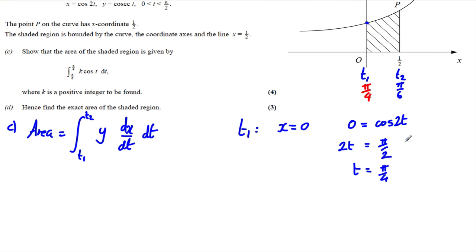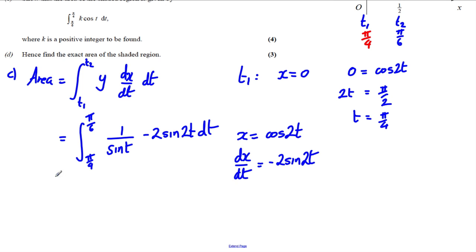Next thing we need to do is work out dx by dt. If x is equal to cos 2t, and we've done this in the previous work, dx by dt is negative 2 sine 2t. And now we're ready to go with regards to this. So the area is the integral between T1, which is pi by 4, and T2, which is pi by 6, of y. Now, y is equal to cosec t. That's 1 over sine t. dx by dt, which is negative 2 sine 2t, all with respect to t. Now, what we could do, the integral between pi by 4 and pi by 6, now that's negative 2 sine 2t over sine t dt.